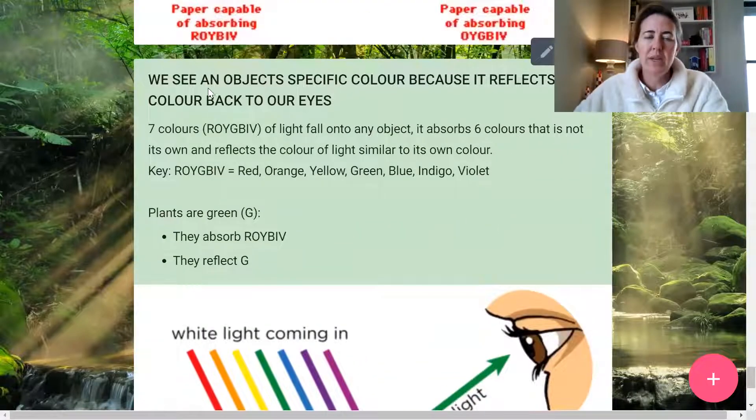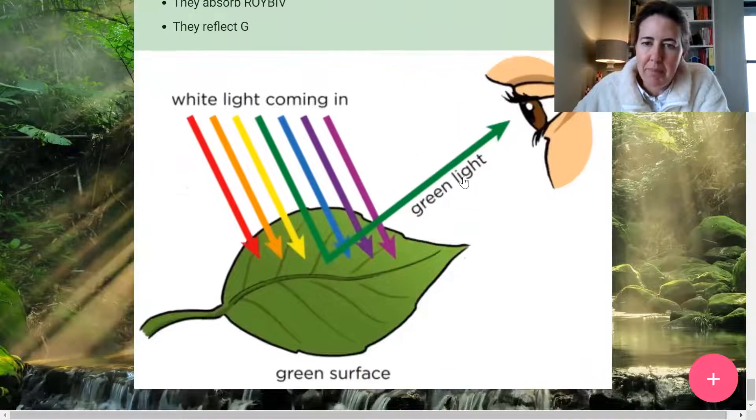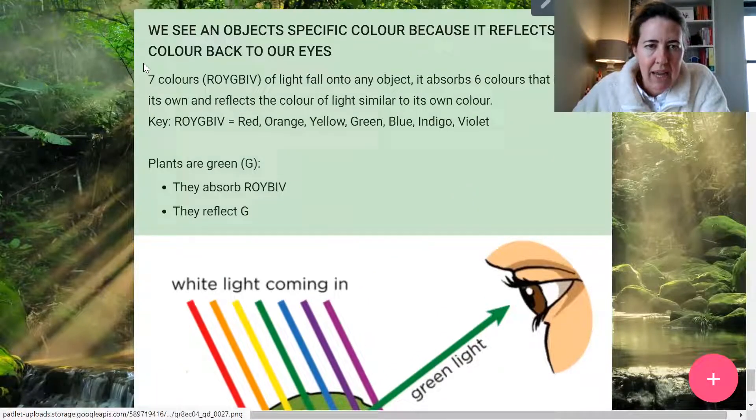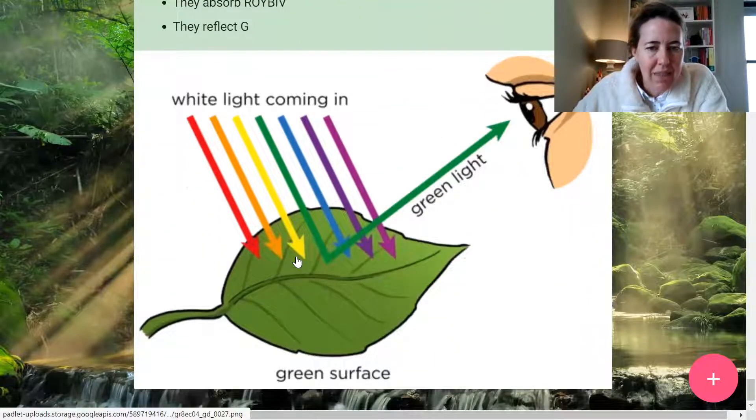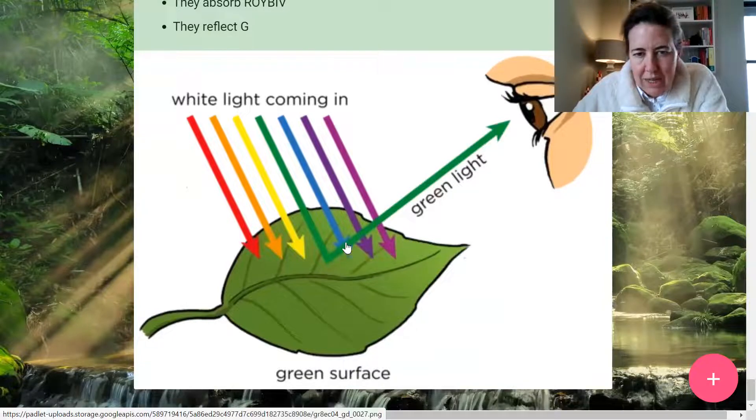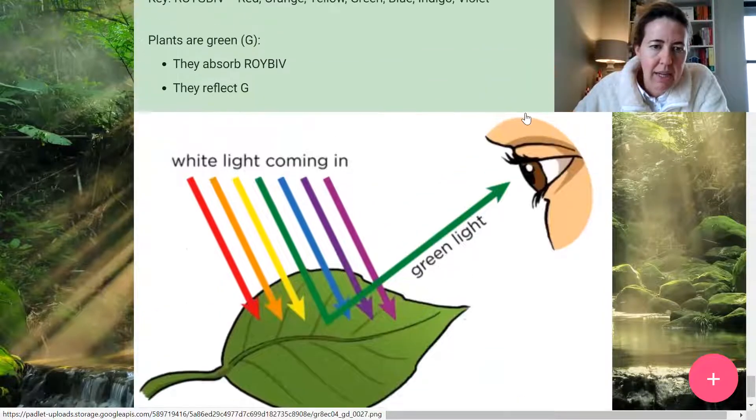Again, we see objects specific color because it reflects that color back to our eyes. The seven colors of white light, which is Roy G Biv falls onto an object and only six of them are absorbed, but one color, one color of light is reflected back to your eye.